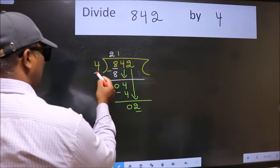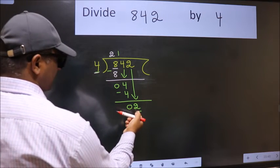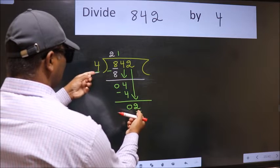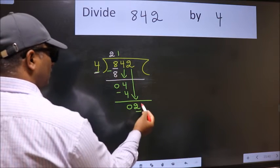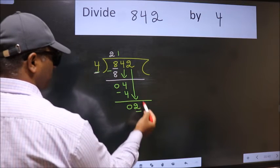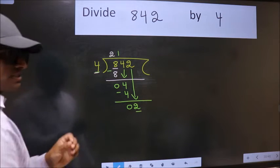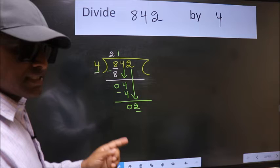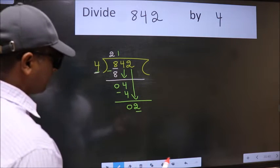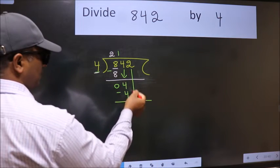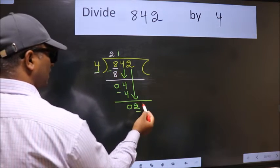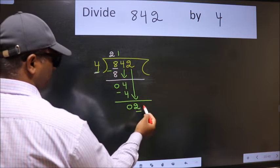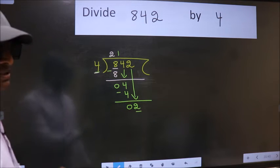Here we have 2 and here 4. 2 is smaller than 4. So, what many do is, they directly put dot, take 0. Which is wrong. Why is it wrong? Because just now you brought this number down. And in the same step, you want to put dot, take 0. Which is wrong.